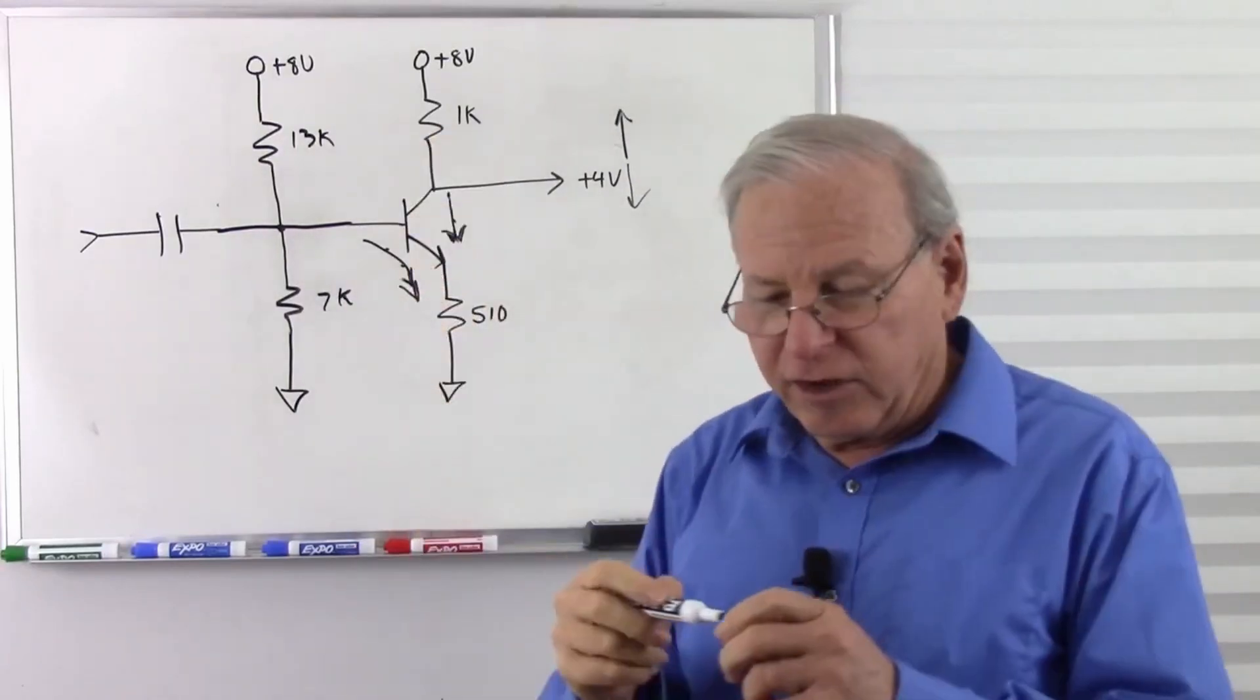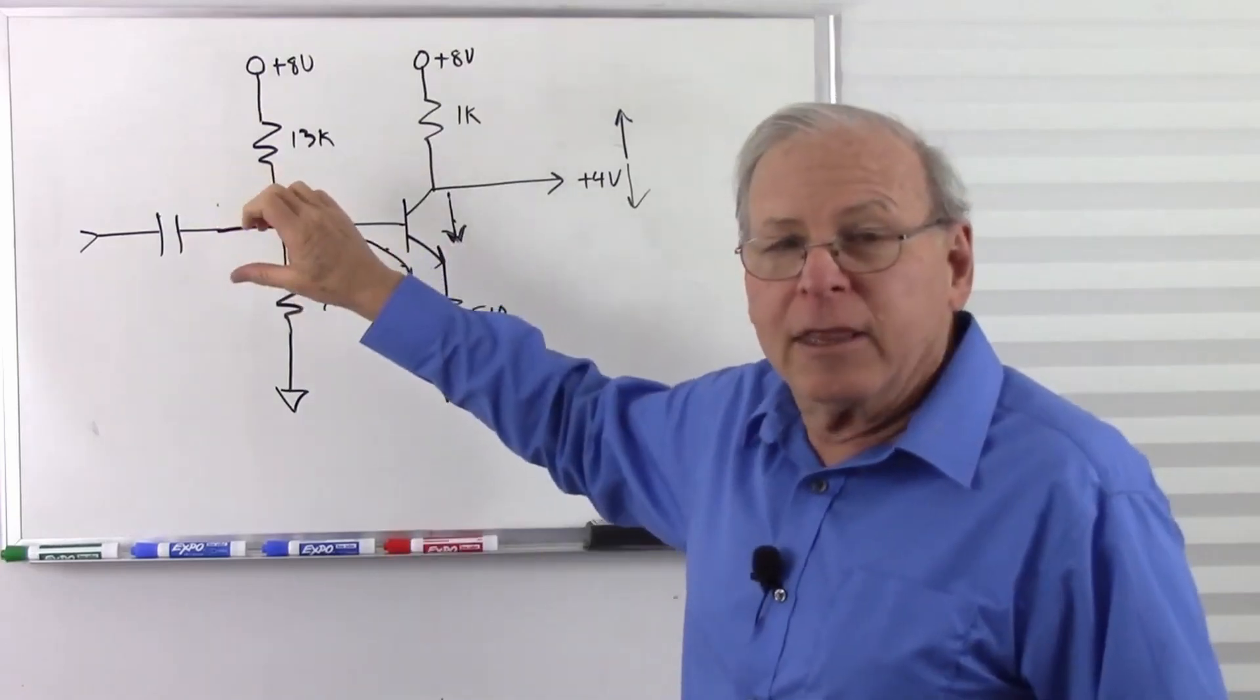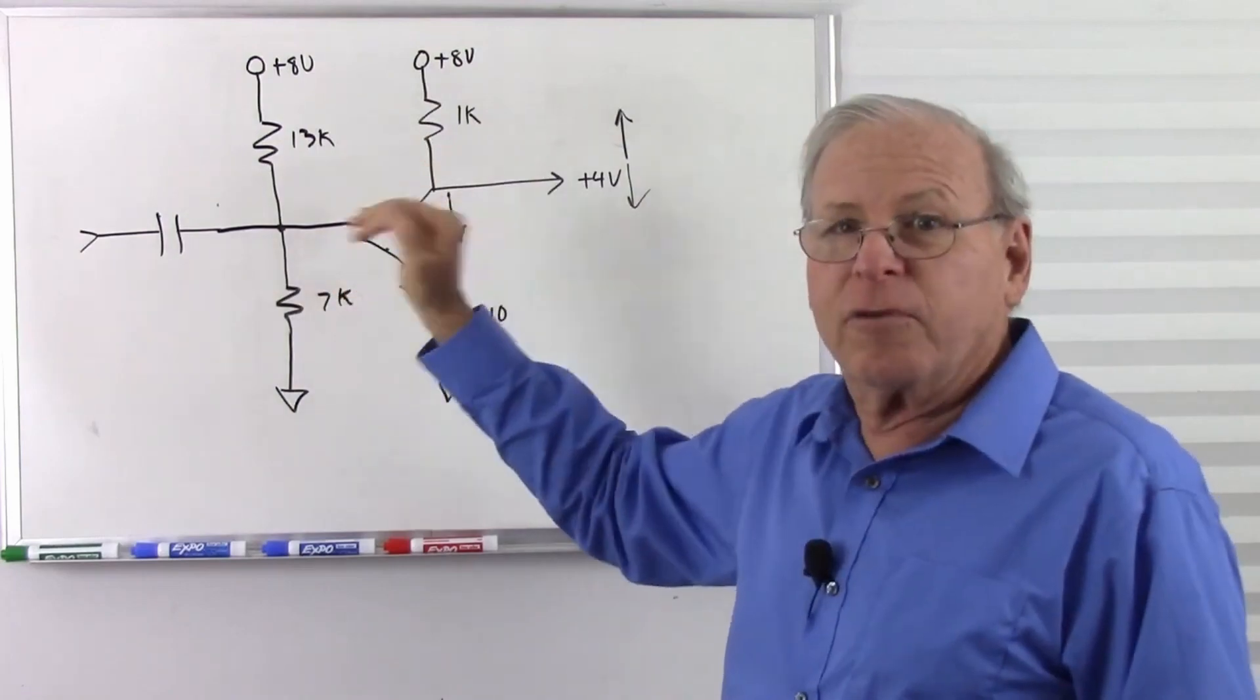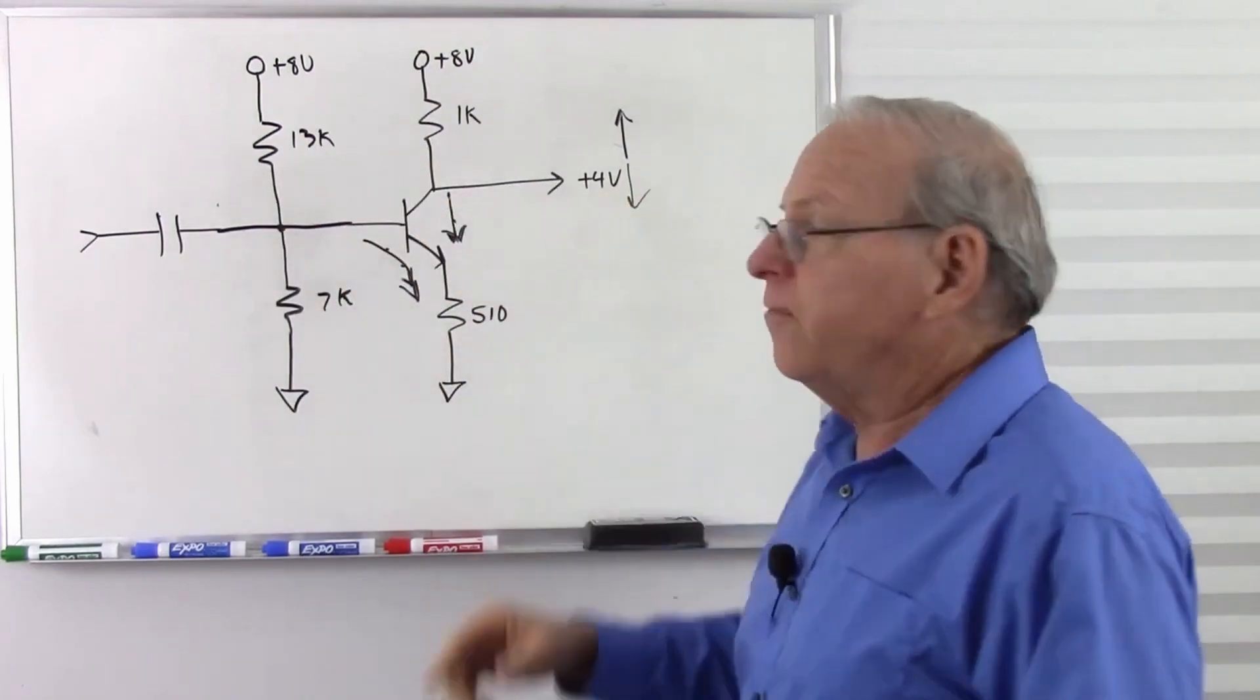So 13 and 7, just by cranking the pot until I got to that 4 volts, 13 here and 7 there is just the voltage that worked to make that 4 volts.